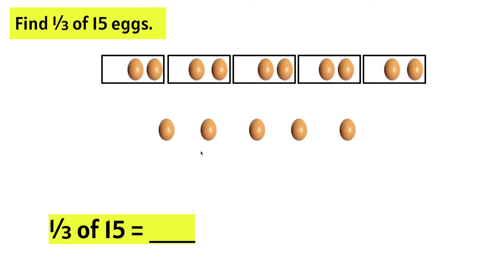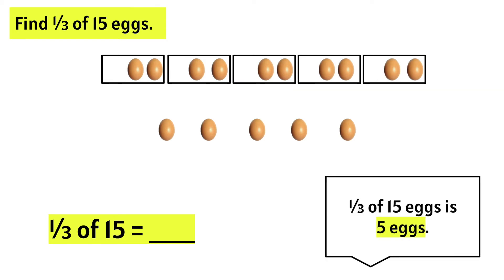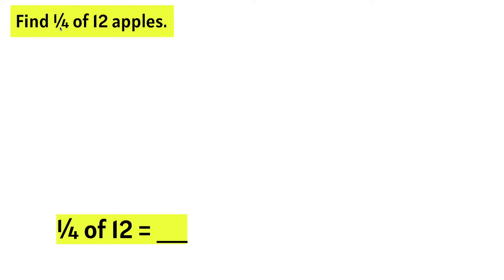Let's check how many eggs is one-third of 15. One, two, three, four, five. We can say one-third of 15 eggs is five eggs. So, one-third of 15 equals five.